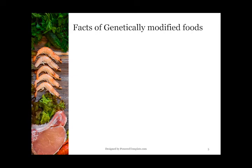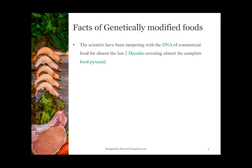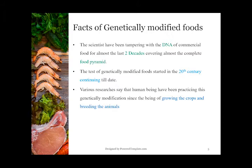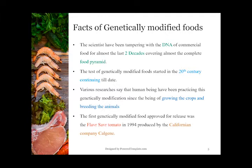Let's have a look at some facts of genetically modified foods. Scientists have been tampering with the DNAs of commercial food for almost the last two decades, covering almost the complete food range. The testing of genetically modified foods started in the 20th century. Various researchers say that human beings have been practicing genetic modification since the beginning of growing crops and breeding animals. The first genetically modified food approved for release was the Flavr Savr tomato in 1994, produced by the Californian company Calgene.